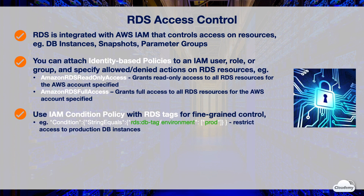Suppose your DB instances have a tag called environment with different values such as dev, test, and prod. You can use an IAM condition policy to check on the DB tag, and grant different permissions for DB instances of different environments.